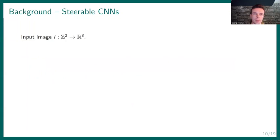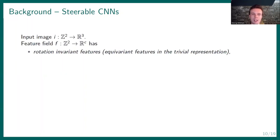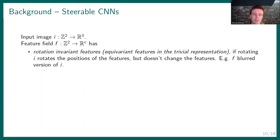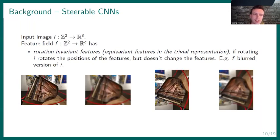So here's an example of some equivariant features. If we have an input image I, then a feature field F inside of the CNN is said to have rotation invariant features, or technically equivariant features in the trivial representation of the rotation group, if when we rotate the input image, the positions of the features change, but the features themselves don't change. So for instance, if we have this input image and blur it, we get this. And if we then rotate the blurred image, we get the rightmost image. And similarly, if we first rotate the image and then blur it, we get the same image. So a blurred image can be seen as a rotation invariant feature map.